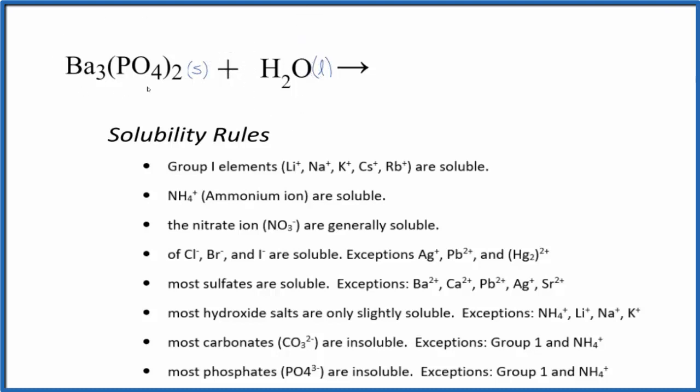Let's check the solubility rules here and see if barium phosphate will dissolve in water and dissociate into its ions. We're looking for either the barium ion or the phosphate. Down here I see that most phosphates are insoluble. There are a few exceptions but most of the phosphates like barium phosphate are insoluble.